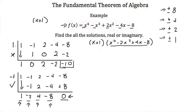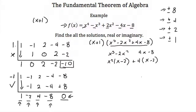Looking at the leftover polynomial x cubed minus 2x squared plus 4x minus 8, I can factor this by grouping. Grouping the first two terms: x squared(x minus 2). Then grouping the last two terms, 4x minus 8: factor out 4 to get 4(x minus 2). Since both groups contain (x minus 2), factor that out to get (x minus 2)(x squared plus 4). Don't forget to carry along the (x plus 1) factor.